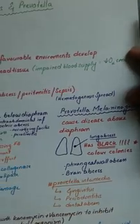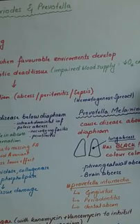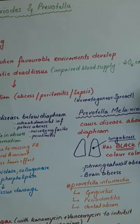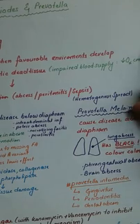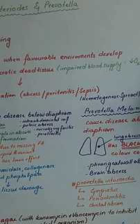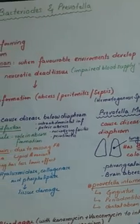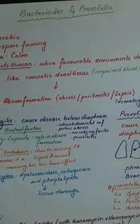This is the most important feature to remember in this disease — you will have blackish color colonies when culturing the specimen.